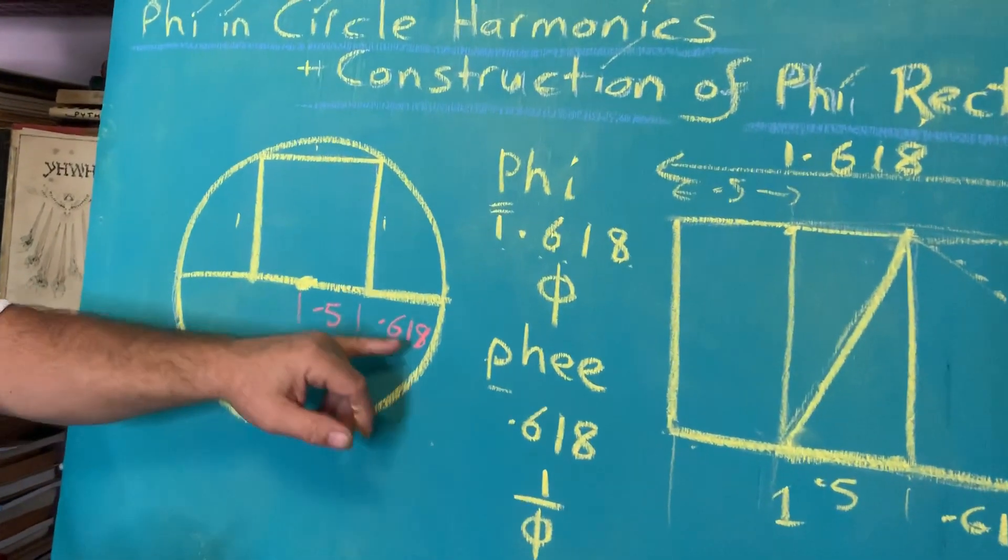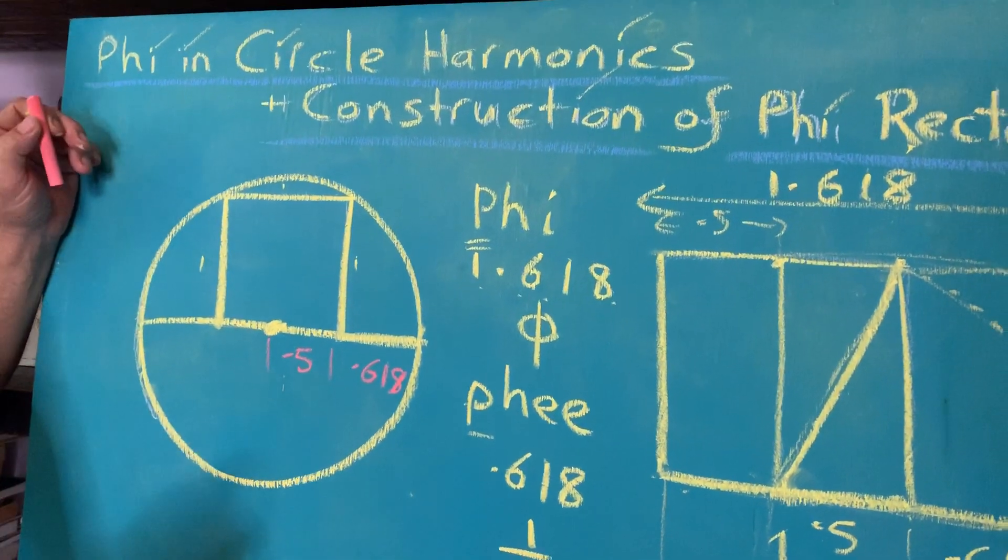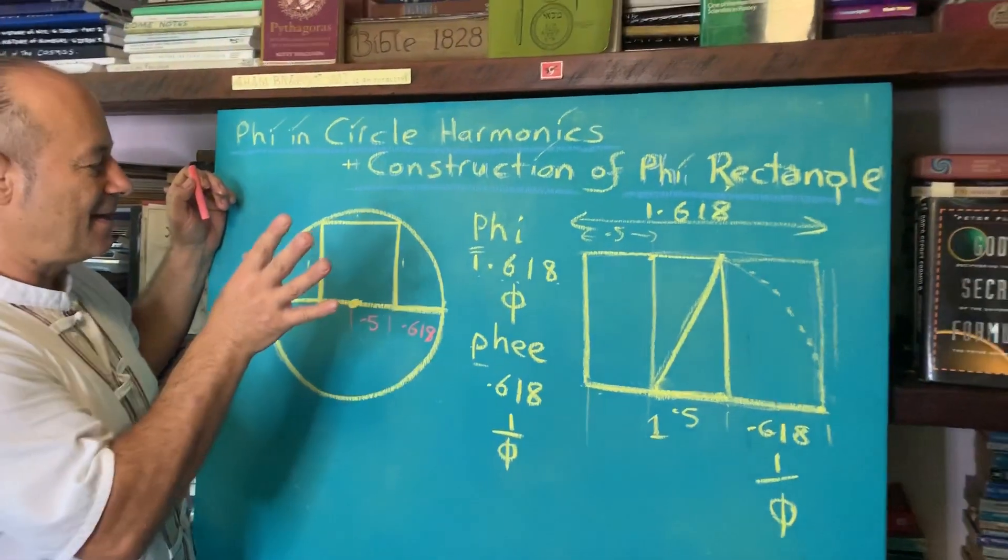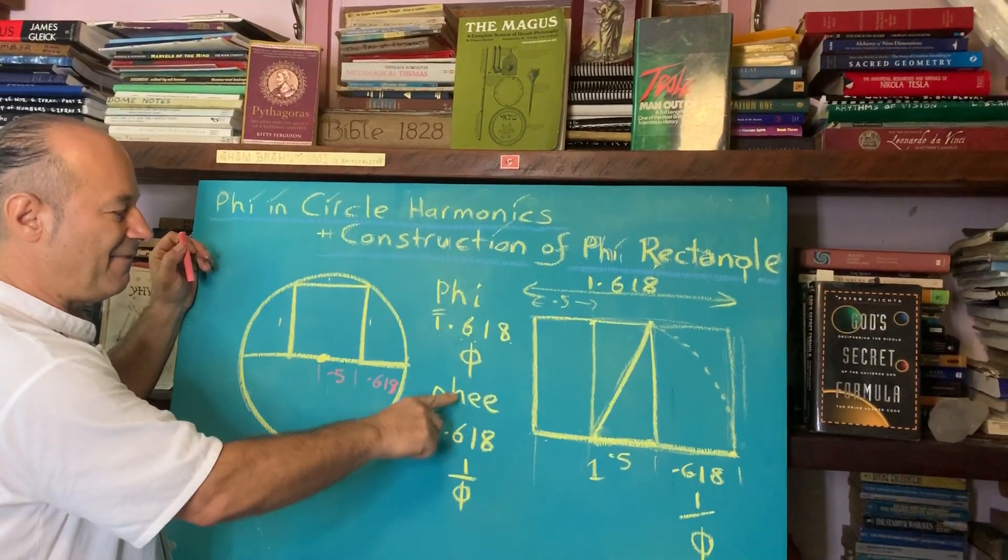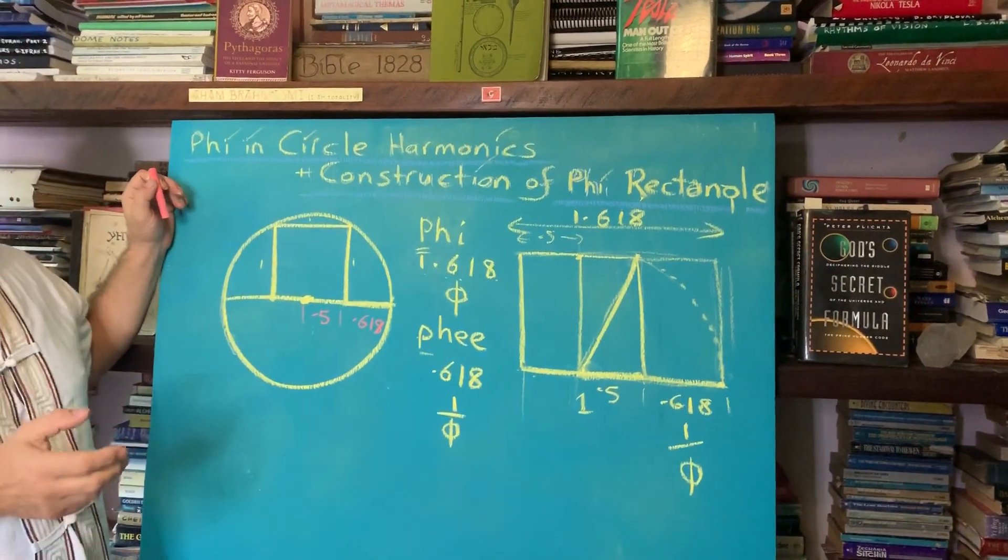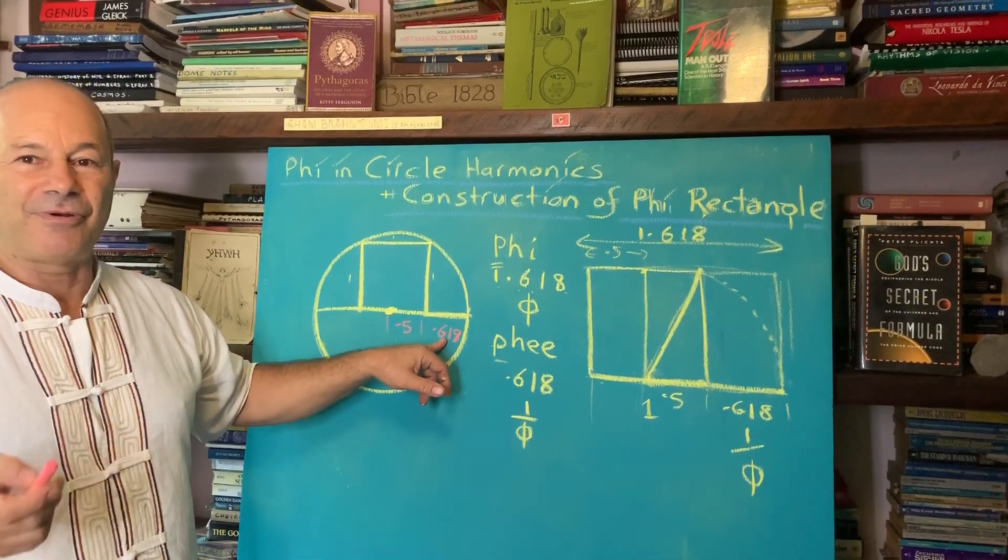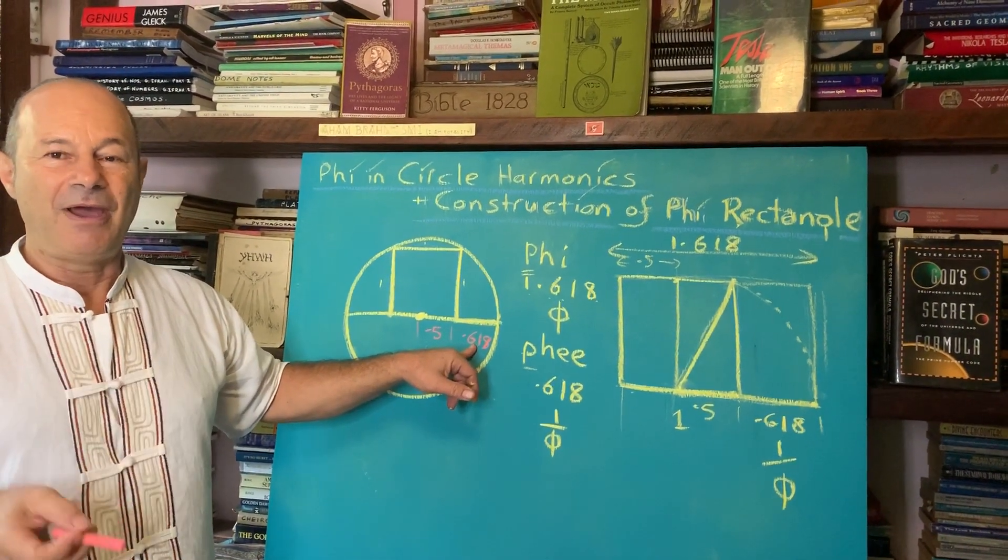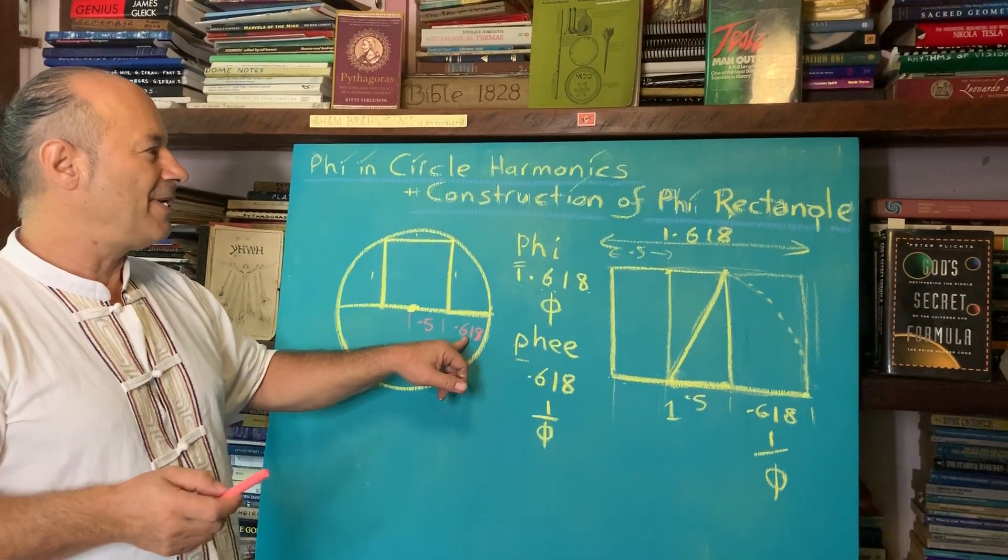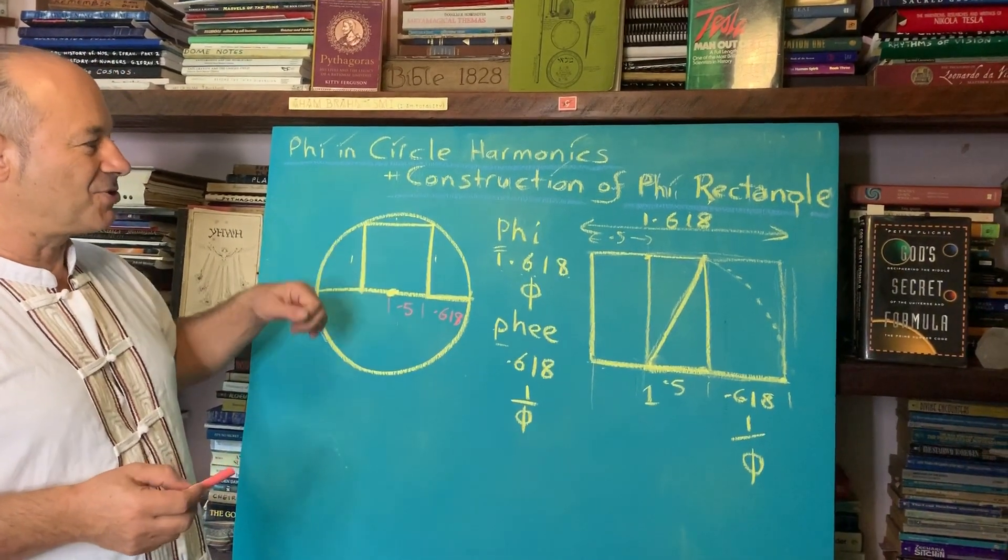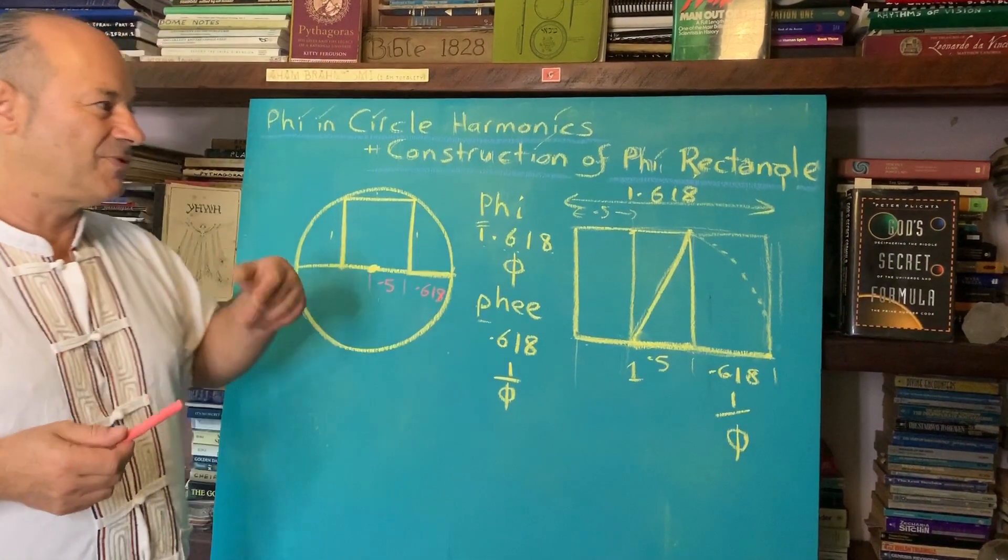This is a fantastic discovery because it shows that whenever we construct circles and unity consciousness, we are talking about the golden ratio. Phi and phee are embedded in the circle. Without this 0.618, we cannot prove the true value of pi because the true value of pi must be based on the harmonics of the golden ratio.